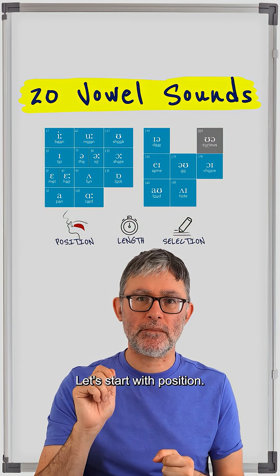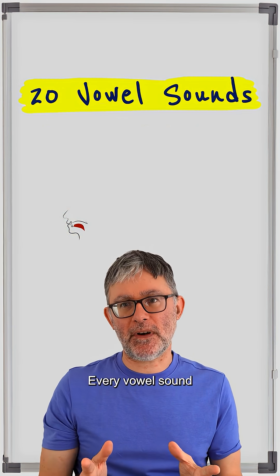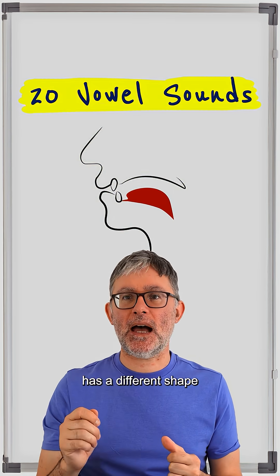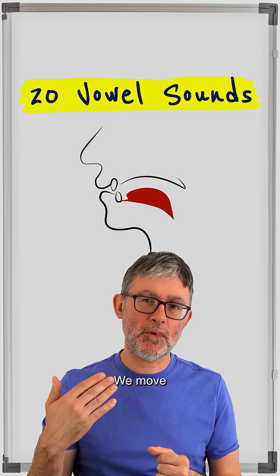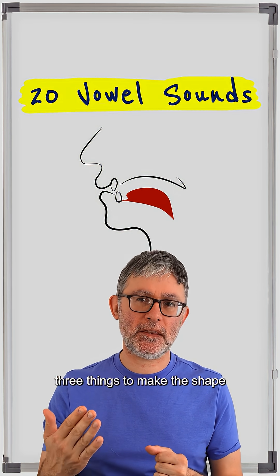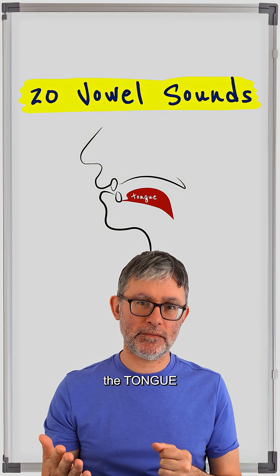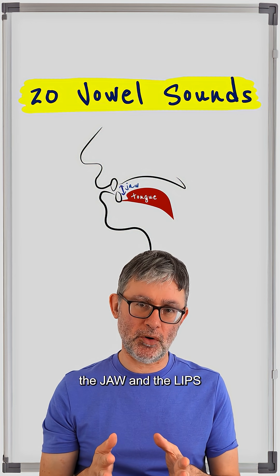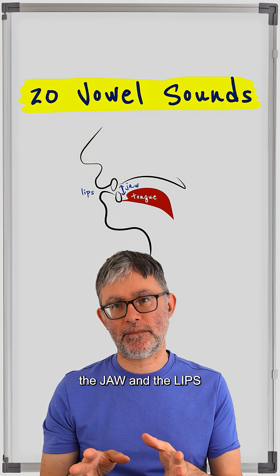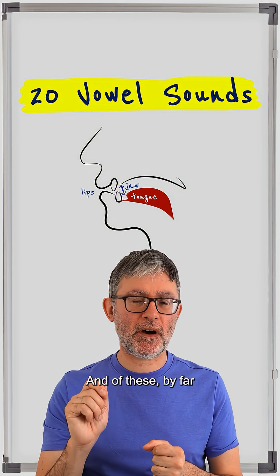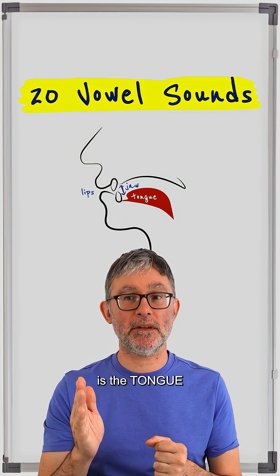Let's start with position. Every vowel sound has a different shape of the mouth. We move three things to make the shape: the tongue, the jaw, and the lips. And of these, by far the most important is the tongue.